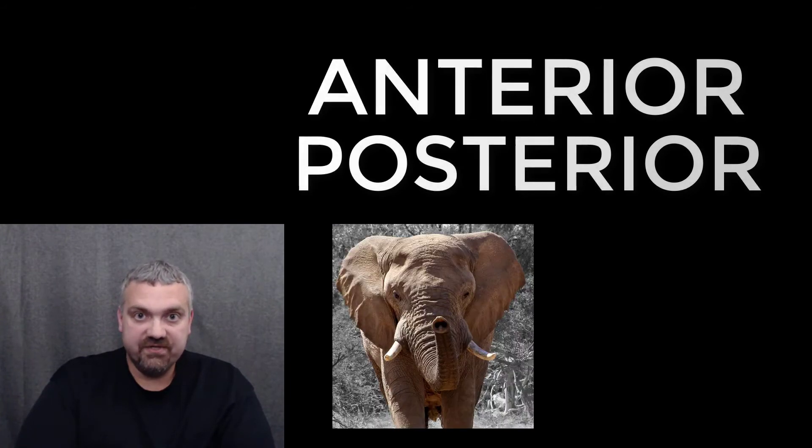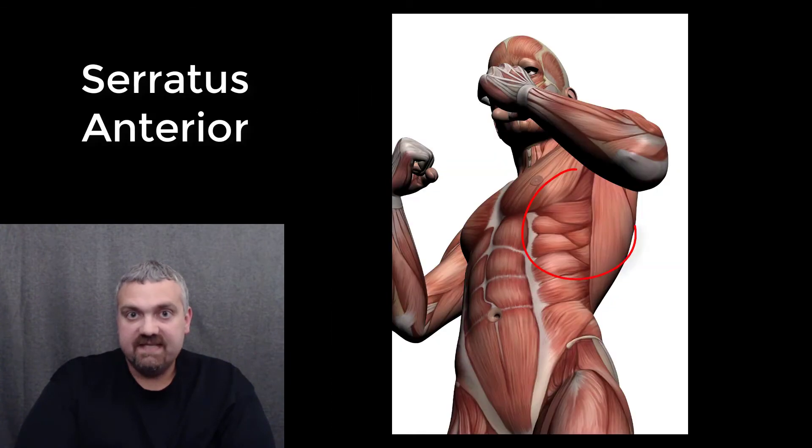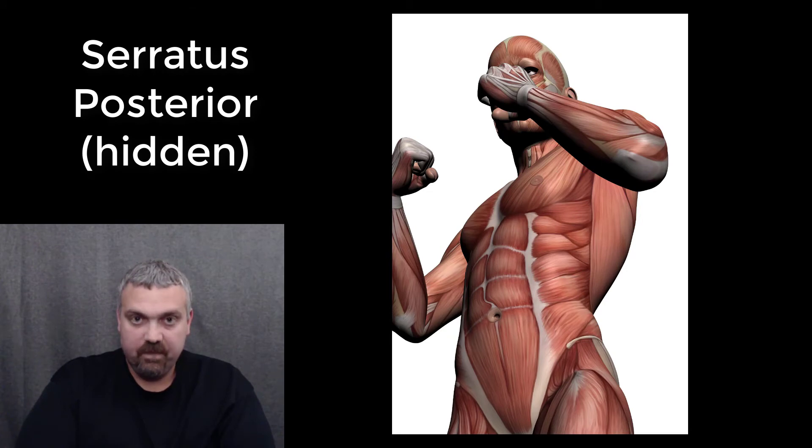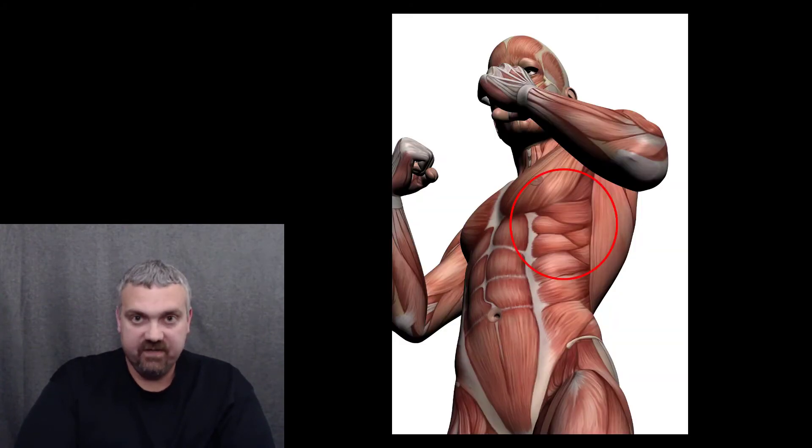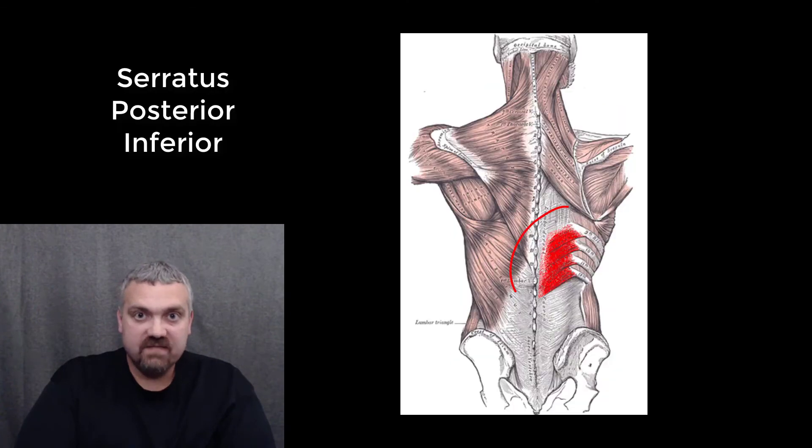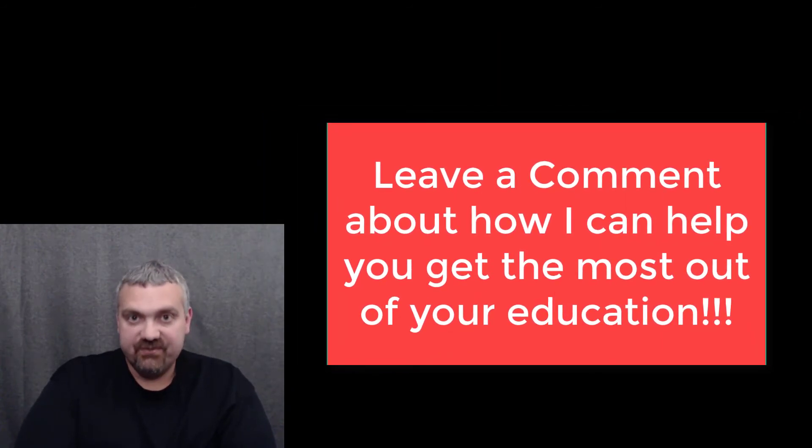Next, let's compare anterior to posterior. So anterior means towards the front. Posterior, towards the back. Key example here is the serratus anterior versus the serratus posterior muscles. So serratus means serrated or knife edge. So the serratus anterior is a serrated muscle on the front of your body, whereas the serratus posterior is a serrated muscle on the back. Now there's a serratus posterior superior on the top and a serratus posterior inferior on the bottom. So that's anterior versus posterior.